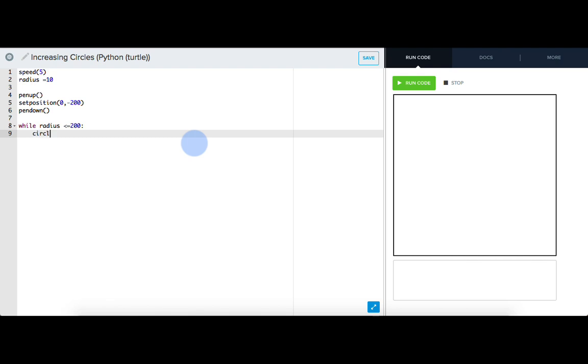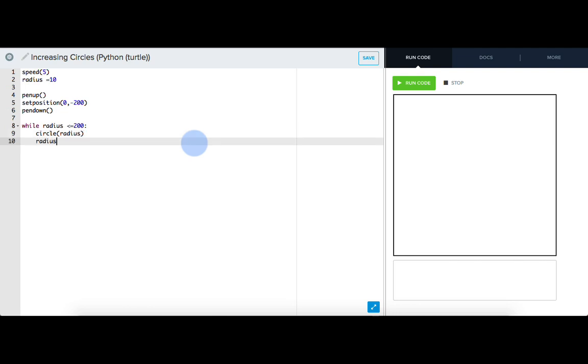Let's write circle radius indented in there. And I know the radius should be increasing by 10 on every repetition. So I'll write radius equals radius plus 10. Let's see how this works.